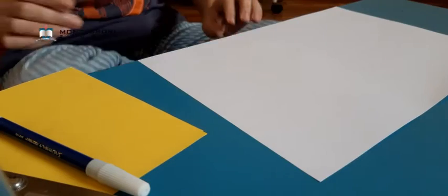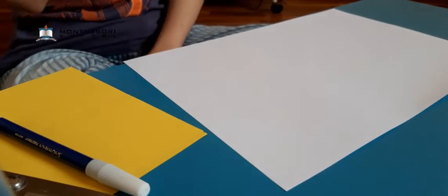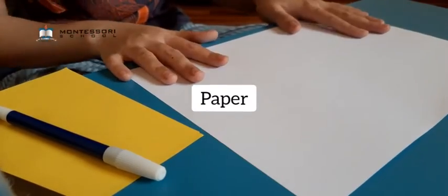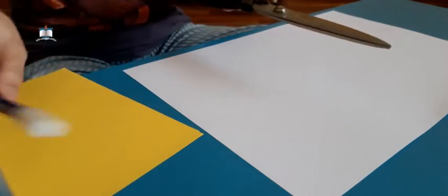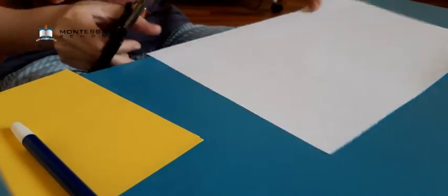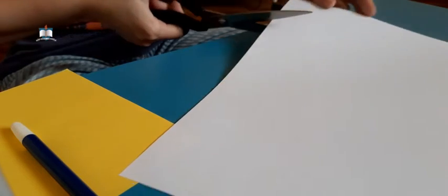So for our activity today, first we're going to make a flashcard number from number one until number 15. What you're going to do right now is get a blank paper, and you will need a scissor and marker, and we want to cut this paper into 15 squares.